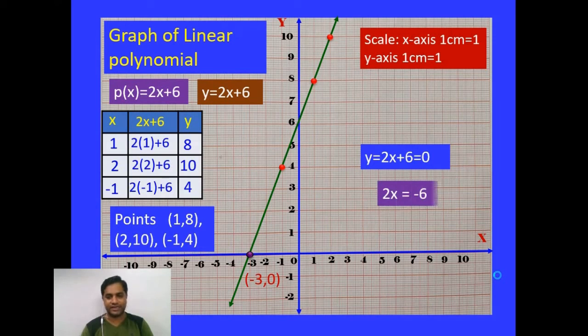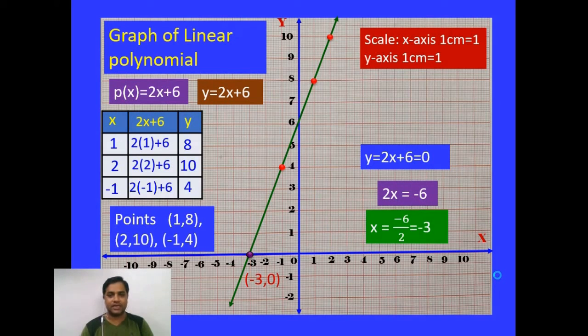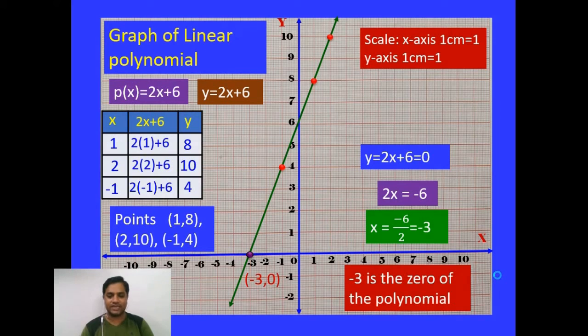By transforming 6 to the right side, we will get 2x = -6. Hence x = -6 ÷ 2 = -3. So -3 is the zero of the polynomial.